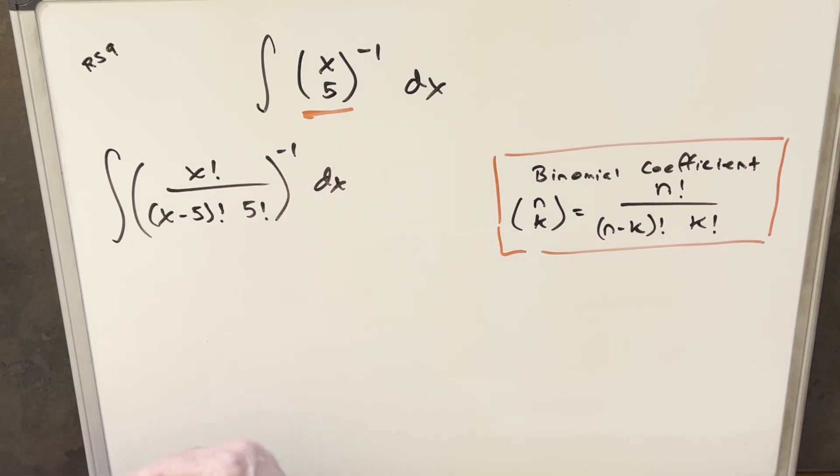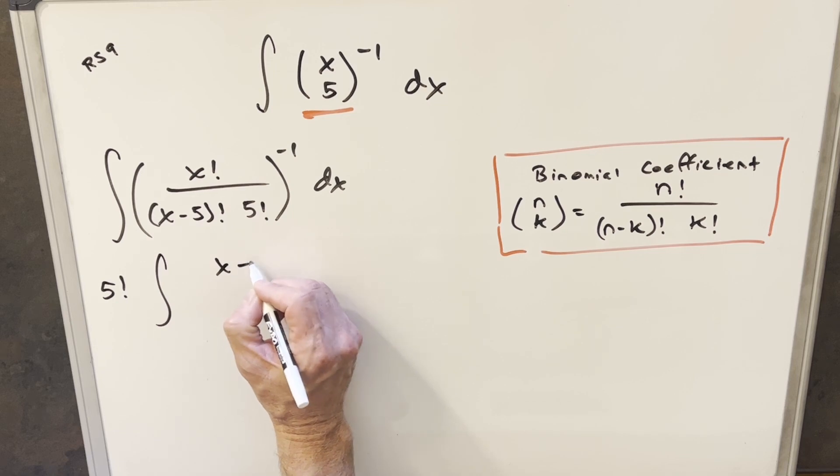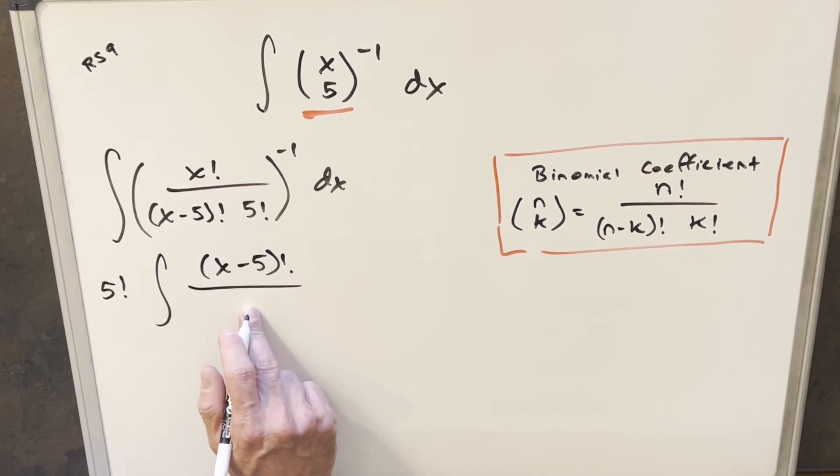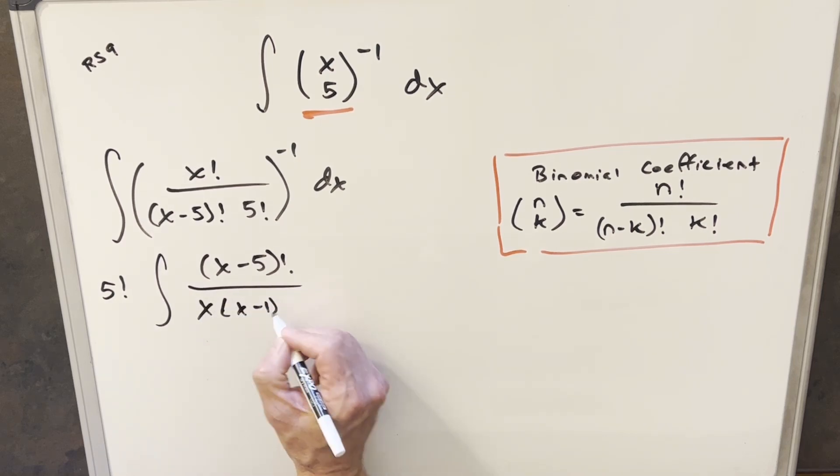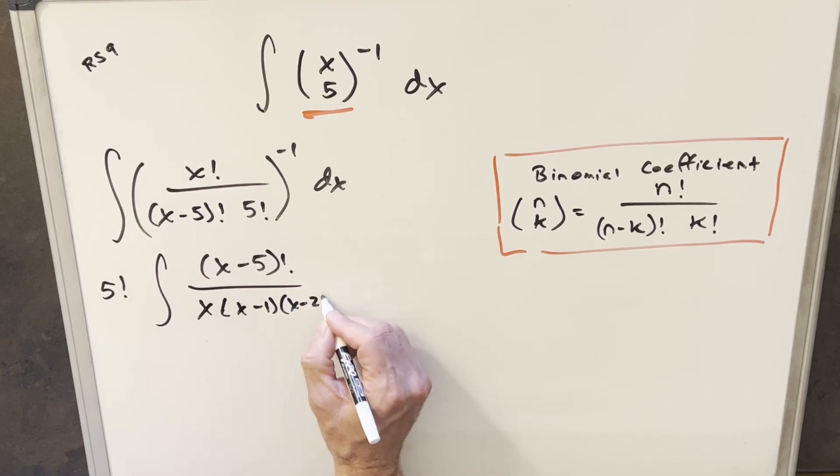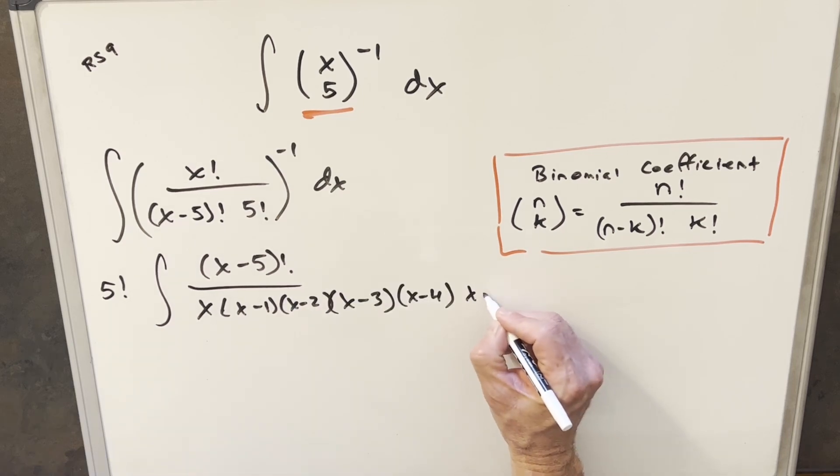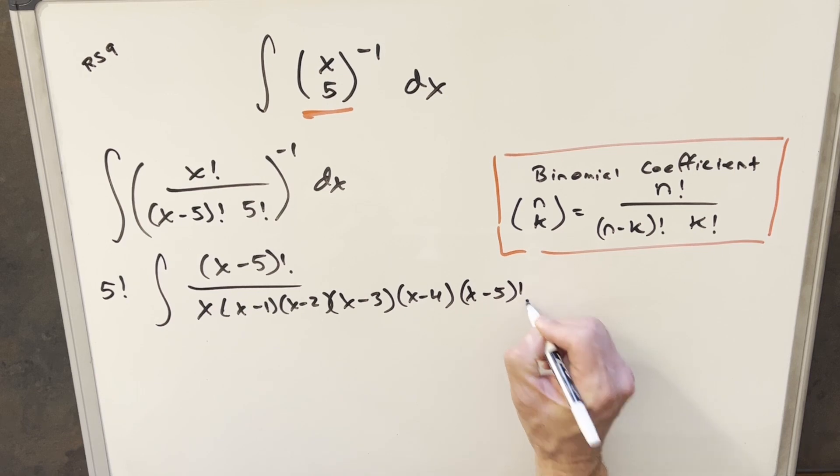So for my next step, I'm just going to take this exponent and flip it. So we'll just get the reciprocal because we're to the minus 1 power. But what I'm going to do is bring this 5 factorial up front in the integral because it's just a constant value. And now we're going to have x minus 5 factorial in the numerator, and we'll have x factorial in the denominator. But what I'm going to do is actually write that out. So we'll write it as x times x minus 1 times x minus 2. And I'm going to write this all the way to x minus 5 factorial.